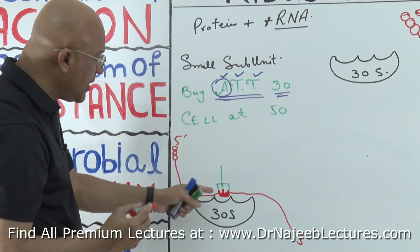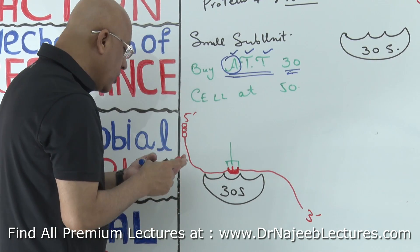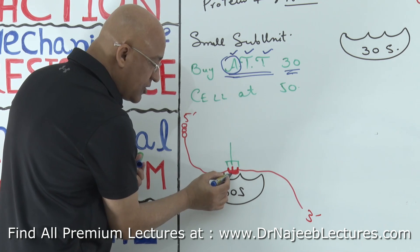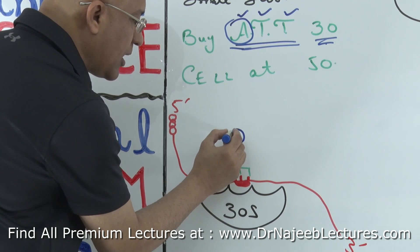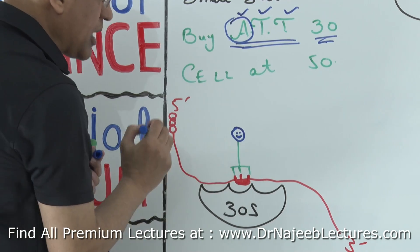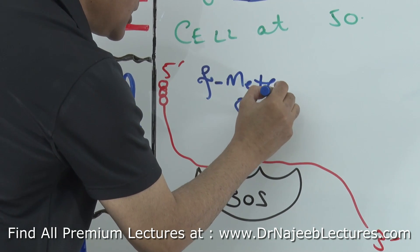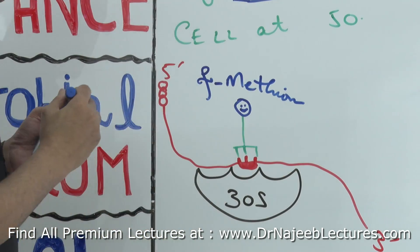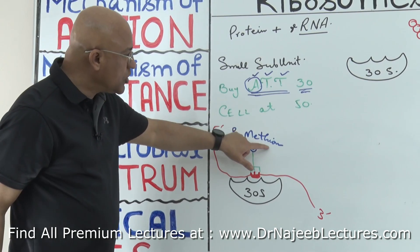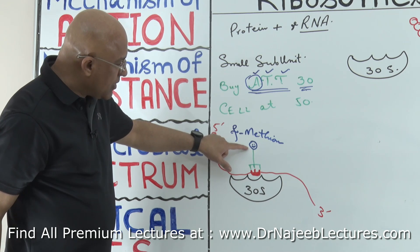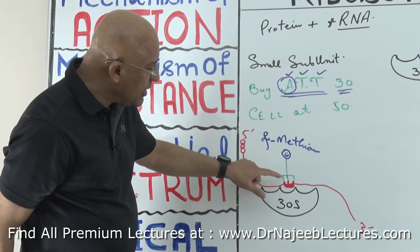This initiating codon starts protein synthesis by binding with a special transfer RNA which carries a special type of amino acid called formyl methionine — fMet — a special amino acid.